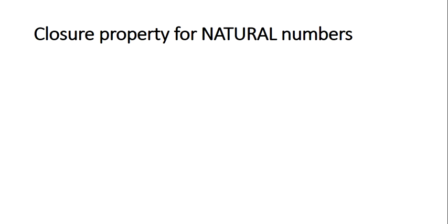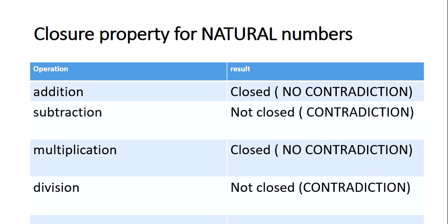So we can sum up our results in a table. Under addition, natural numbers were closed. Under subtraction, they were not closed because there was a contradiction. Under multiplication, they were closed because there was no contradiction — all natural numbers multiplied by natural numbers give natural numbers. But under division, they were not closed because we can have contradictions to this rule.